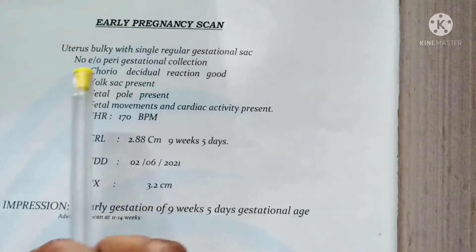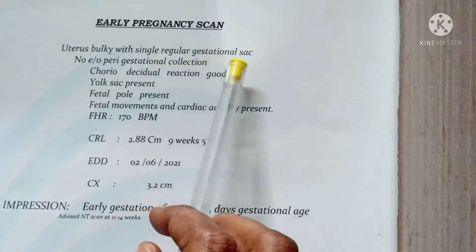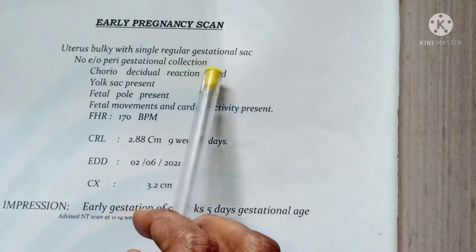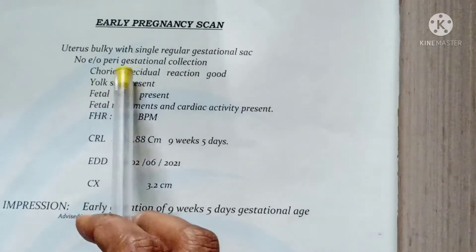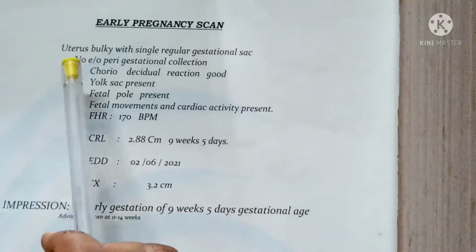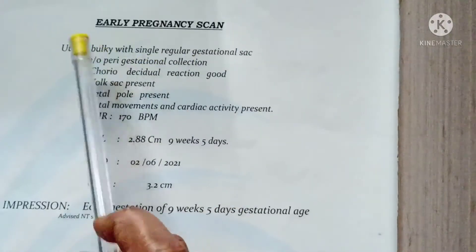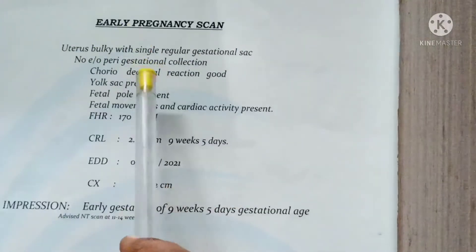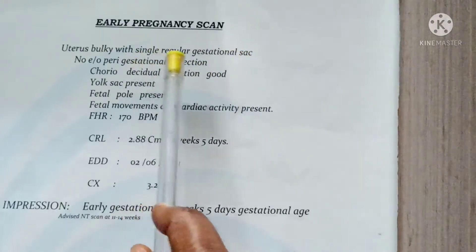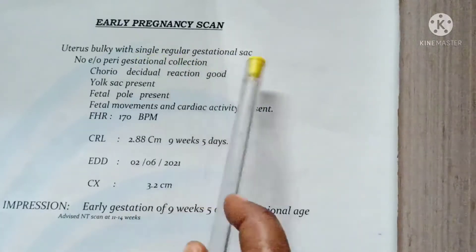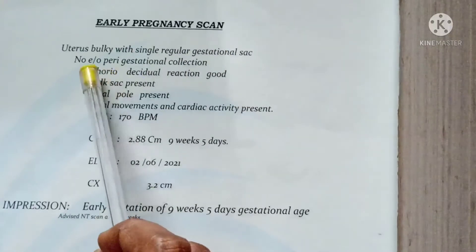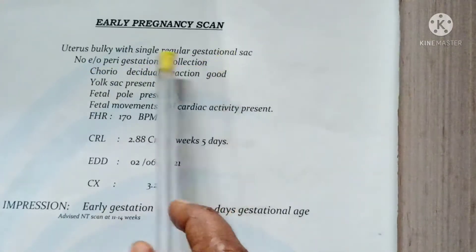First, uterus bulky with single regular gestational sac and perigestational sac collection. No perigestational sac collection. The uterus is bulky and enlarged. A single baby gestational sac is formed and no perigestational sac.